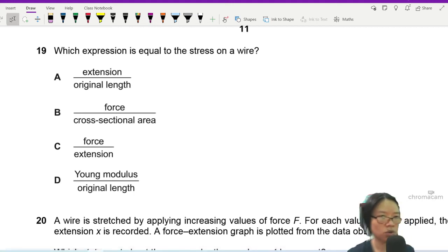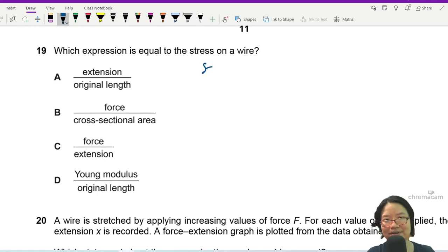Question 19, very straightforward bonus question. Which expression is equal to the stress on a wire? Well, stress definition is force per unit area because it has the same unit as pressure. So the answer is B.